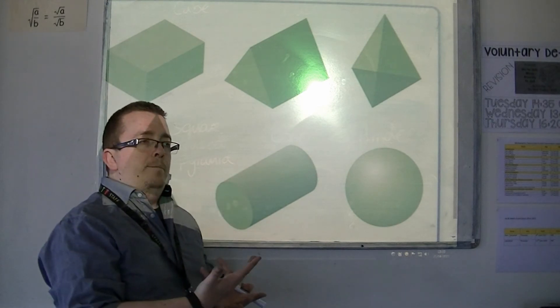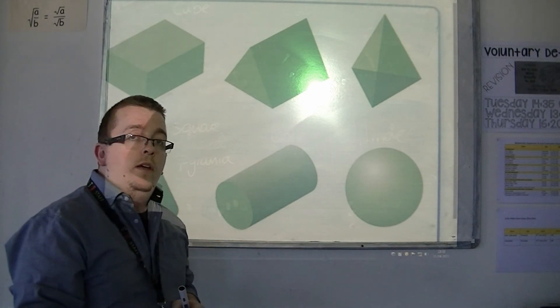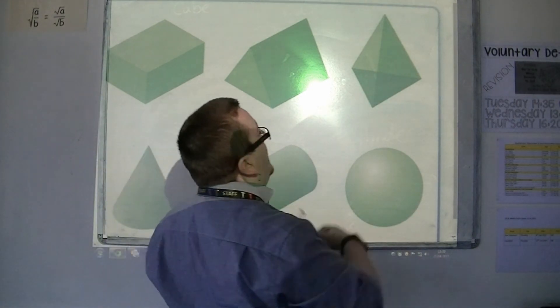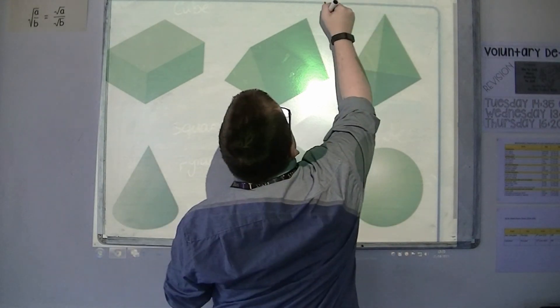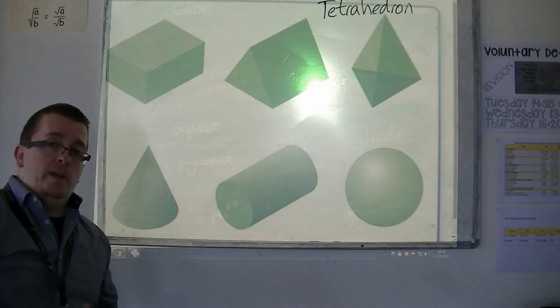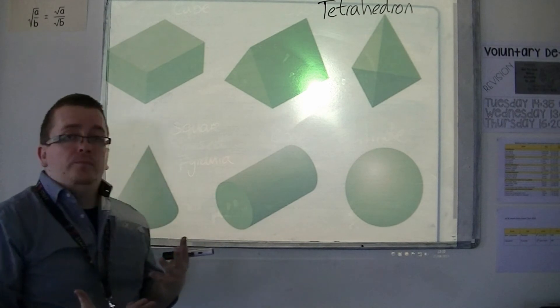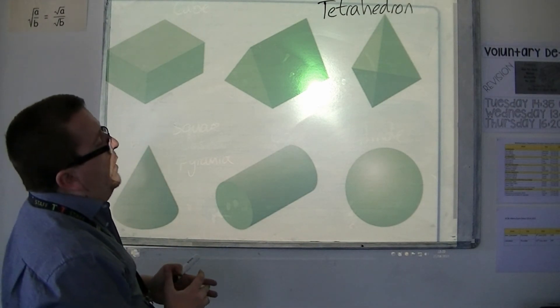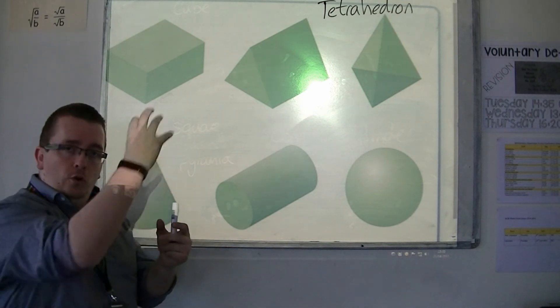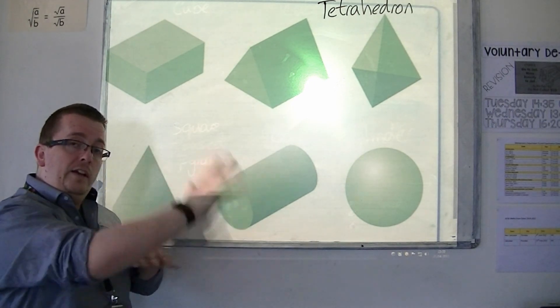If you imagined the pyramids, the pyramids of Egypt, to have triangular bases, and all those triangles to be the same size, this would be referred to as a tetrahedron. Some people like to think of this as a triangular-based pyramid, but its proper name is a tetrahedron. Tetra means four. So when you're playing Tetris for example, Tetris uses four block shapes. Tetrahedron means four faces, so it has four triangles.